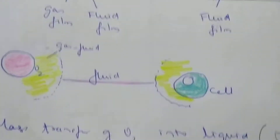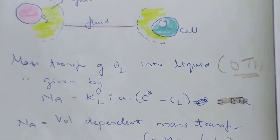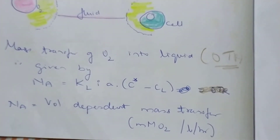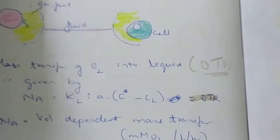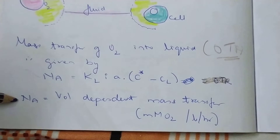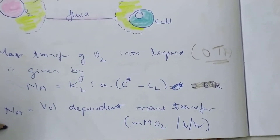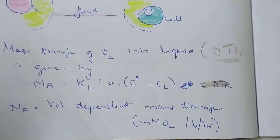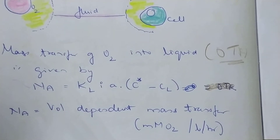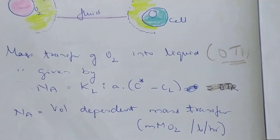So I will be defining them a little more in the concepts. We all have to understand that what we are talking about today is oxygen transfer rate. Oxygen transfer rate is nothing but how much oxygen is getting transferred into the fermentation medium. It is given by the formula: NA = kL·a·(C* − CL). NA is the volume-dependent mass transfer, measured in millimolar of oxygen per liter per hour — meaning how much oxygen transfer will happen in the total bioreactor volume.